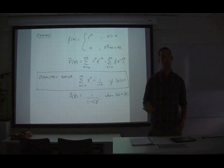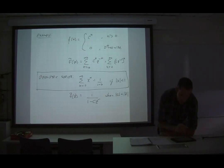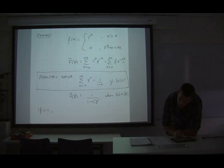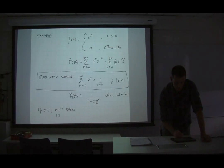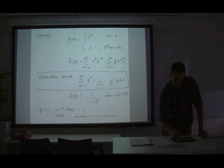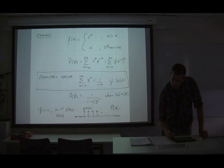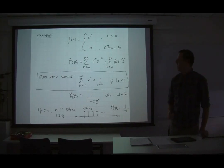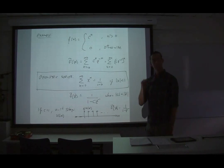A special case: if C equals one, we get a unit step function U of N — zero for all negative time, then one forever. Its Z-transform is one over one minus Z to the minus one. This is marginally stable — teetering on the edge of instability, just going along at a flat value of one.